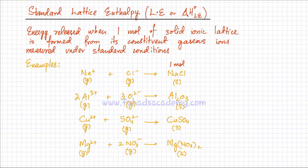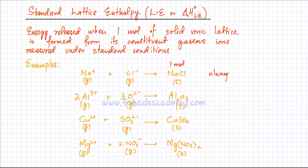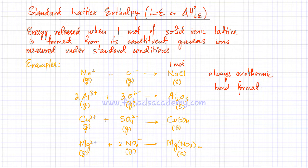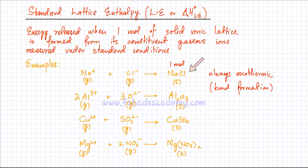The enthalpy change for this reaction is called the lattice enthalpy, and it is always going to be exothermic. Energy is always released, and the reason is that the process only involves bond formation. Bond formation is an exothermic process, so the lattice enthalpy is always exothermic and always has a negative sign. The gaseous ions are coming together to form a solid ionic lattice, which is an example of bond formation.